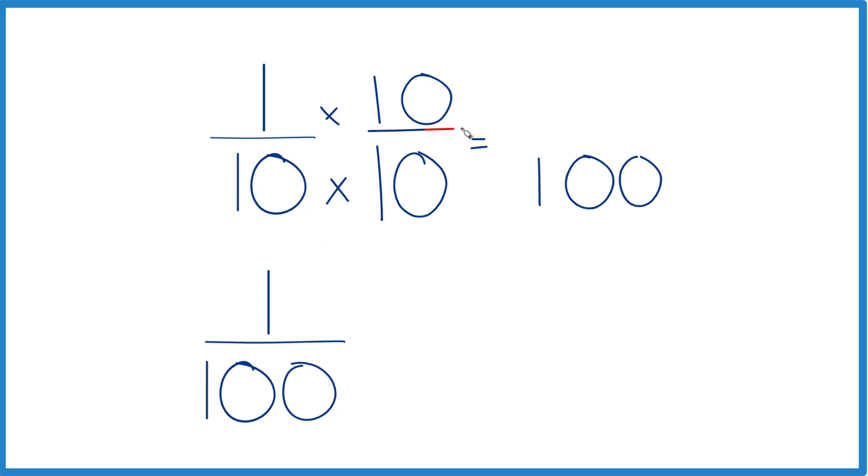That's because 10 over 10, 10 divided by 10 is 1. So we're just multiplying by 1. We don't change the value, just the way it's written.